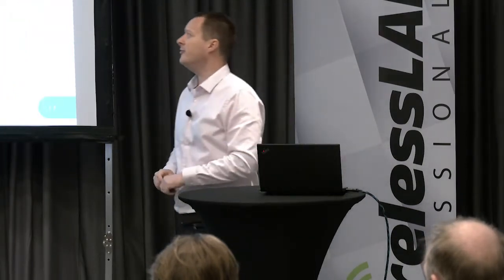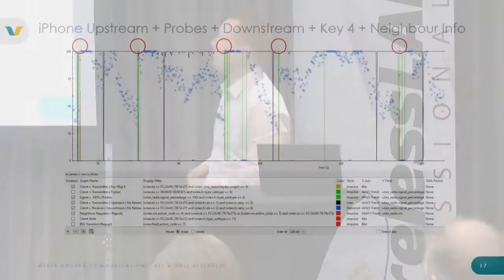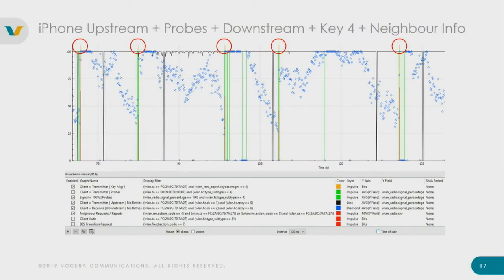Now let's see what 11k does. With the iPhone and 11k on, it's much, much smoother — we don't have those big jagged drops in the transmission line. I've highlighted in red along the top the neighbour reports: when the iPhone roams to a new AP, it immediately says 'tell me about all the other APs you know about so I can possibly roam to them.' So it's not waiting until it needs to roam — it asks the new AP right away where it can go next, and has that information ready.